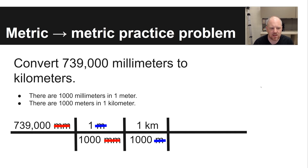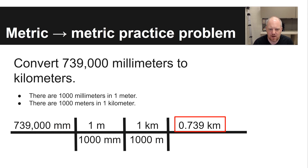The end result is that you have no remaining units other than the ones you seek. You can see that kilometers remain on top while the other units have canceled out. Then you take 739,000 divided by 1,000 divided by 1,000 to get 0.739 kilometers. The train tracks method is really handy for keeping track of units and putting all your information in one place.